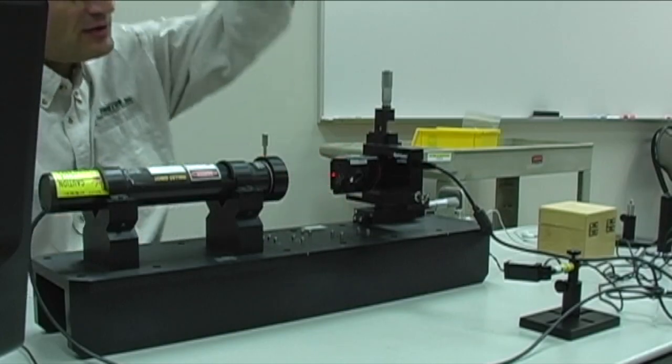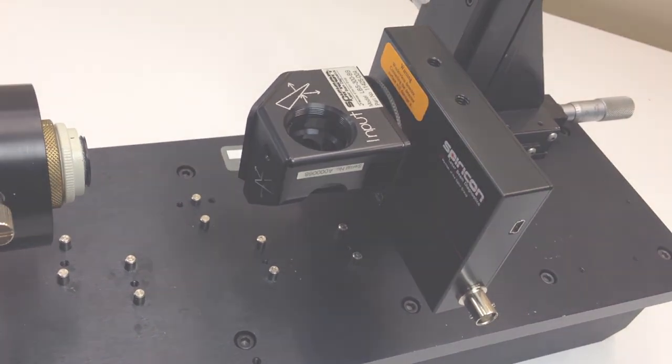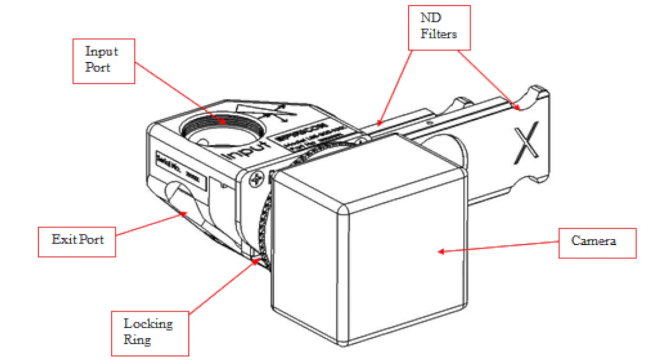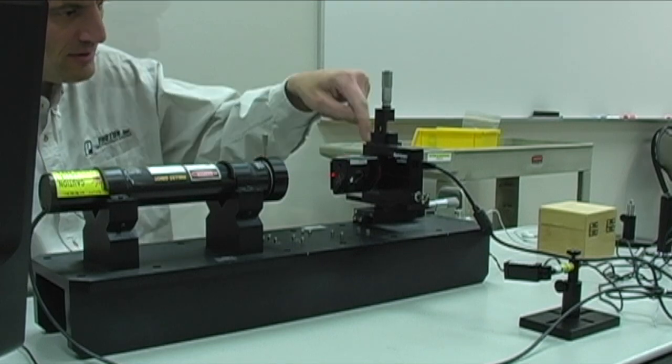So if I had a laser here coming from the top, 96% of the light would go straight through. 4% would reflect from the front surface onto another wedge inside. Another 4% of that 4% would be deflected into the camera.